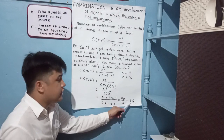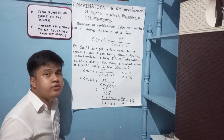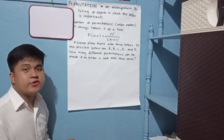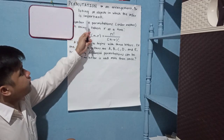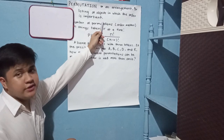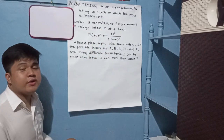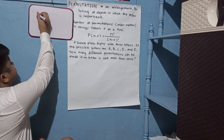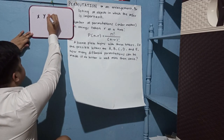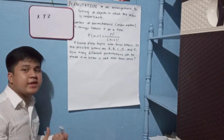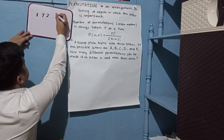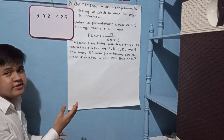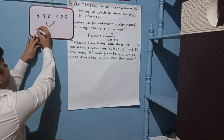So twenty over two equals ten. Therefore, there are ten different groups of friends I could take with me to the concert. Now let us proceed to permutation. Permutation is an arrangement or listing of objects in which the order is important. Because in permutation, for example, if you have letters X, Y, and Z and you want to make an arrangement, X, Y, Z is different from Z, Y, X, because these are permutations.